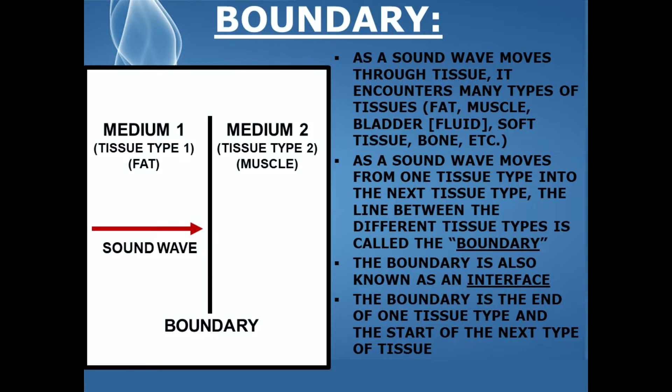As a sound wave moves through tissue, it encounters many types of tissues in the body, such as fat, muscle, the bladder — which is fluid — soft tissue, bone, etc. As a sound wave moves from one tissue type into the next tissue type, the line between the different tissue types is called the boundary. The boundary is also known as an interface. The boundary is the end point of one tissue type and the start point of the next type of tissue.